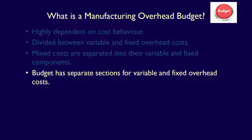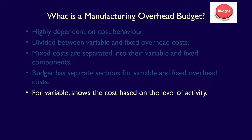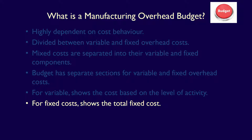The manufacturing overhead budget is separated into sections, one for variable and one for fixed. This allows management to easily see which costs will change with a change in the level of activity, such as an increase in production volume. Variable costs are shown based on the level of activity, which might be machine hours, direct labour hours, or units produced. Fixed costs are shown as fixed, at least within the relevant range.